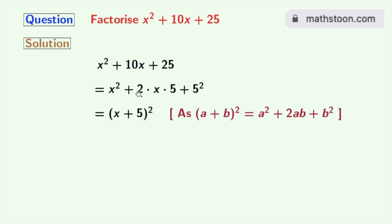Here applying it, this gives us x plus 5 whole square. Now look that it has the exponent 2, so it can be written as x plus 5 times x plus 5.